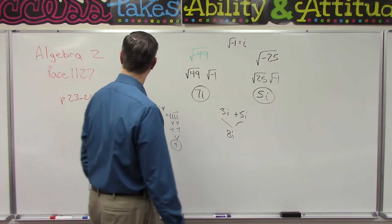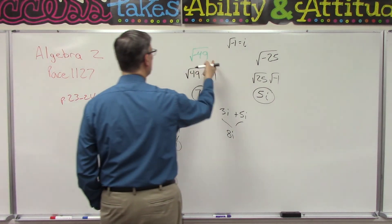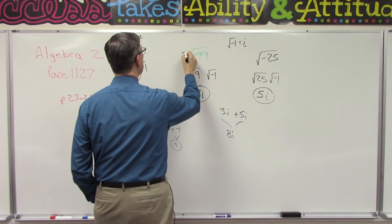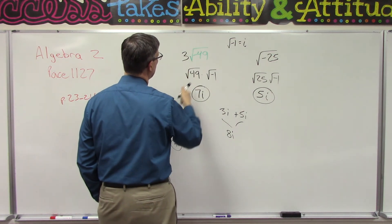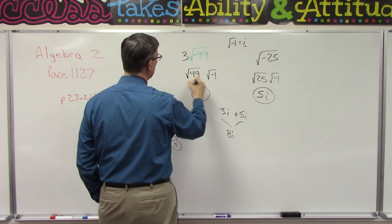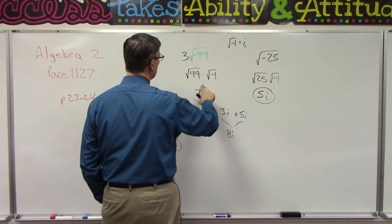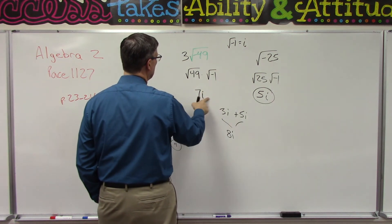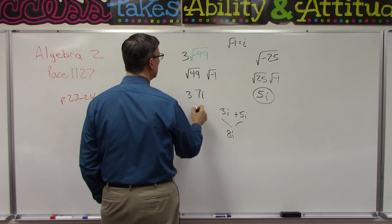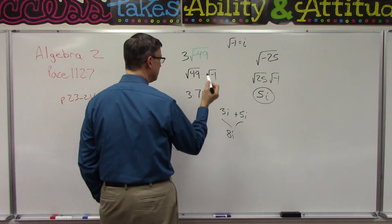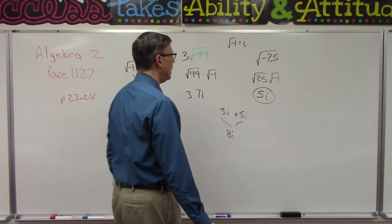What if instead of just negative 49 we had a 3 in front — 3 times the square root of negative 49? Well, that part simplified to 7i, so basically we would just be saying 3 times 7i, which would just become 21i.